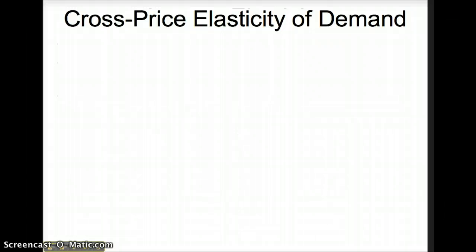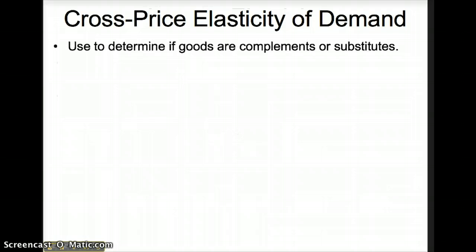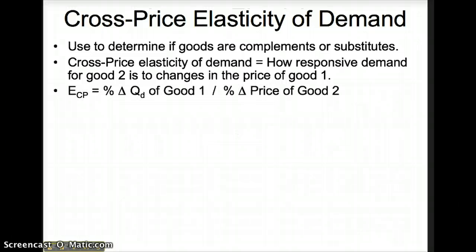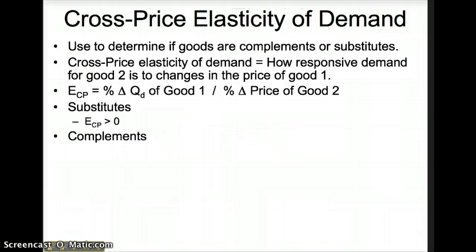The next type of elasticity is cross-price elasticity of demand. Cross-price elasticity is used to determine if goods are complements or substitutes. It measures how responsive demand for good 2 is to changes in the price of good 1. The formula is the percentage change in quantity demanded of good 1 divided by the percentage change in price of good 2. Substitutes will have a positive cross-price coefficient, complements will have a negative coefficient, and unrelated goods will have a coefficient equal to 0.